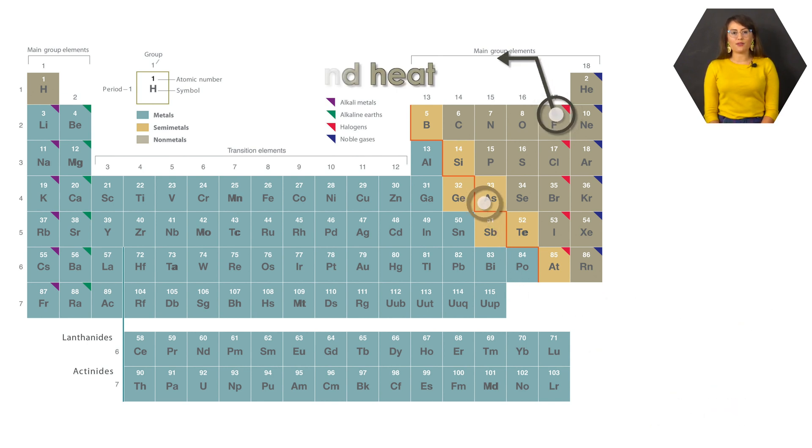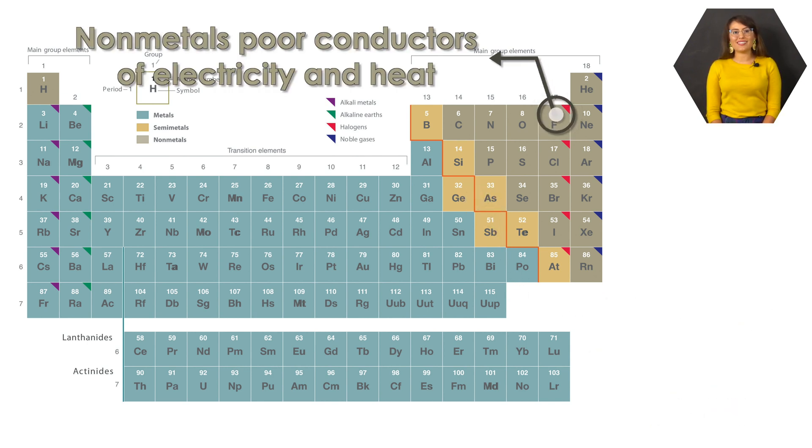Finally, we have the non-metals, which are located on the far right side of the periodic table, with the exception of hydrogen. Non-metals are not good conductors of heat and electricity, and are very dull in coloration.